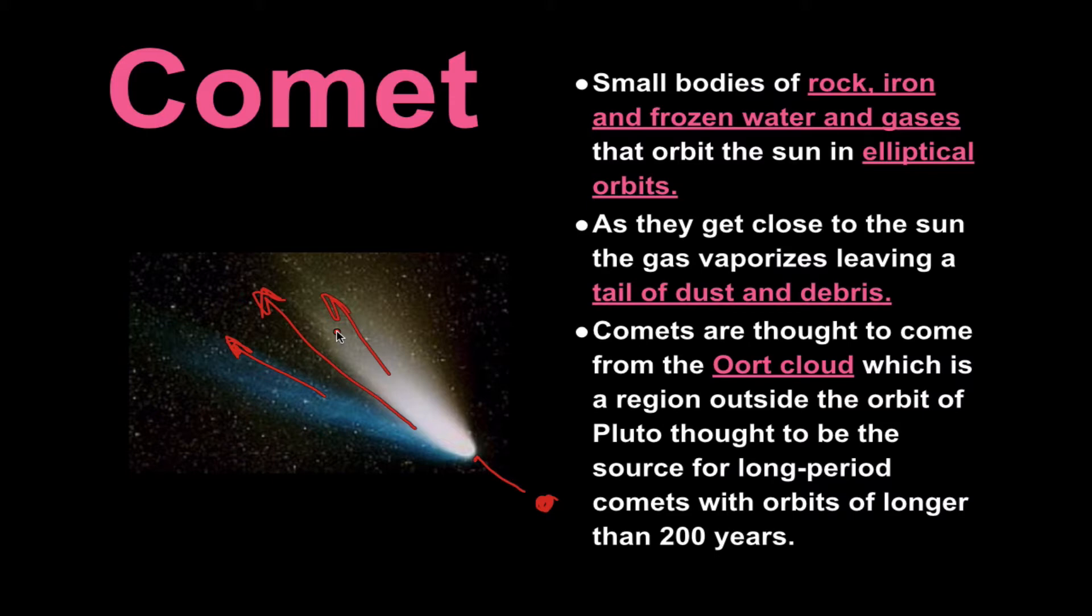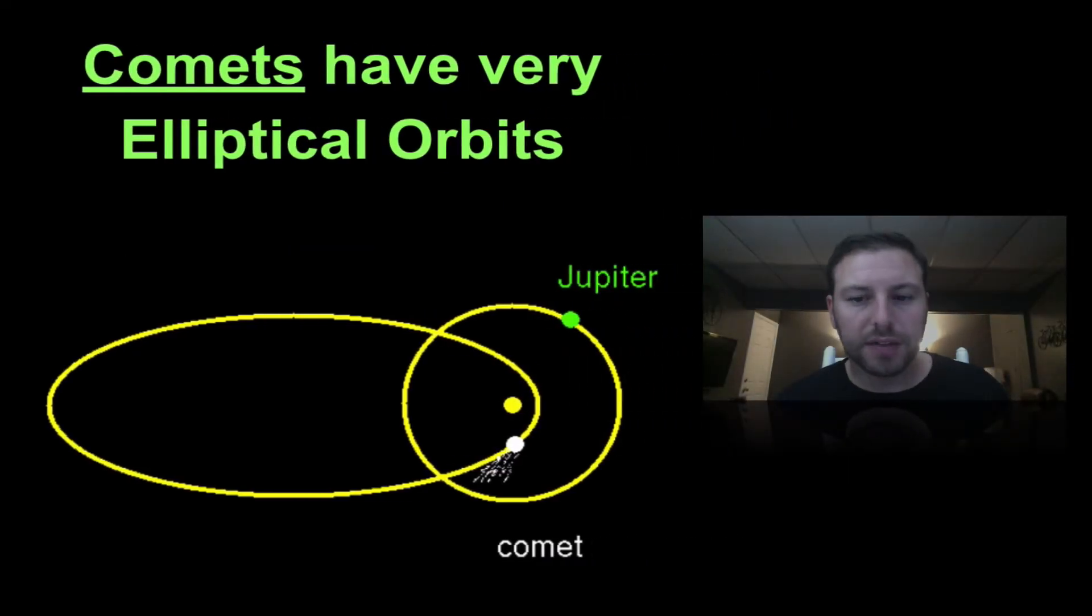They believe they come from the Oort Cloud which is this region outside the orbit of Pluto and this is combined with a highly elliptical orbit is why we only see them periodically. So there's that highly elliptical orbit. Once again elliptical is very similar to oval-like. So the more elliptical the more oval-like it will be.